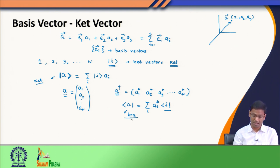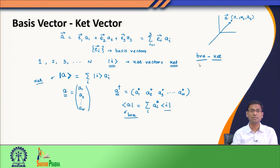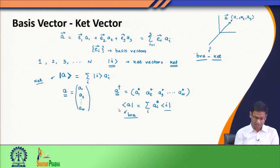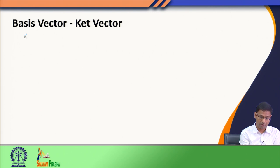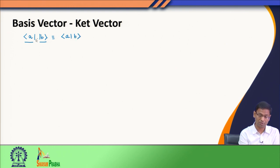So now I have a bra function and a ket. Together we call them a bracket — this is what Dirac proposed, and it also resembles a regular bracket with a 'c' missing. Now let us see what we get when we take a scalar product of a bra and a ket. I have a bra ⟨a| and a ket |b⟩, and I am taking their scalar product, which I can write in this combined bracket notation ⟨a|b⟩.